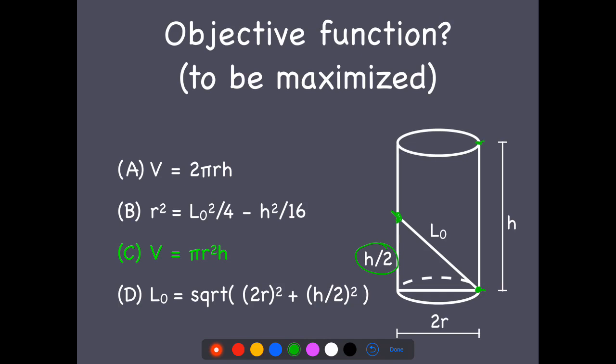And so that's where we get this diagram. And 2r is just because the radius of the barrel is half of the diameter. Okay.